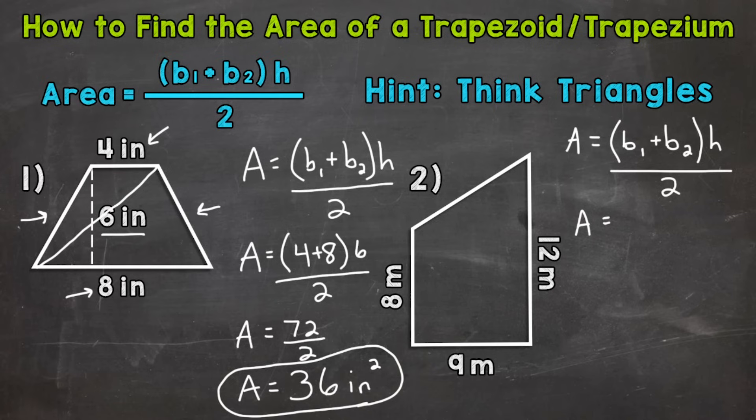It doesn't really matter which one you use for base one or base two, because adding them together, 12 plus eight or eight plus 12 is going to give you the same thing. I'm going to use eight for base one and 12 for base two. So eight plus 12 times the height of nine meters.